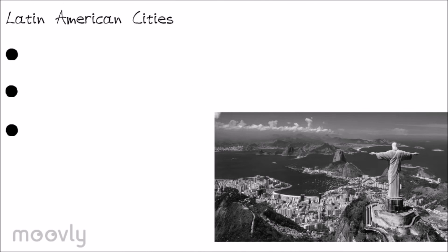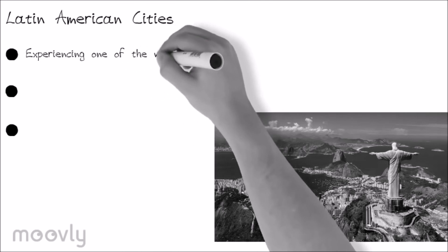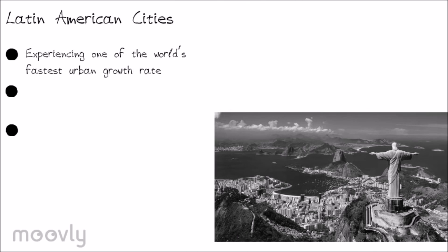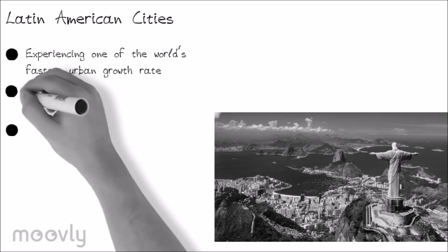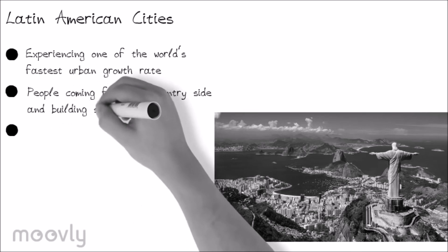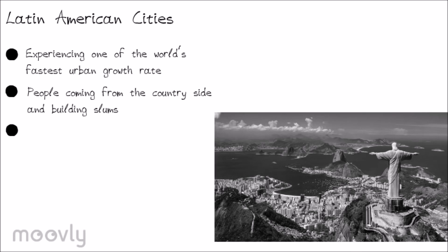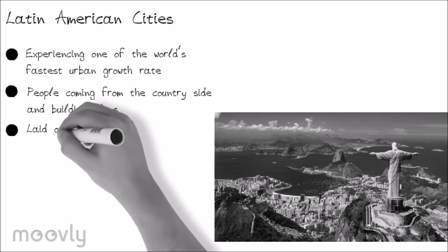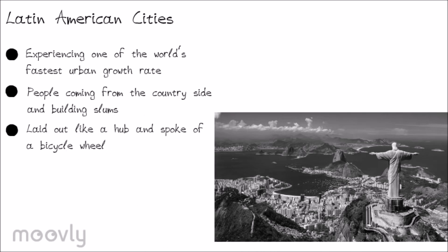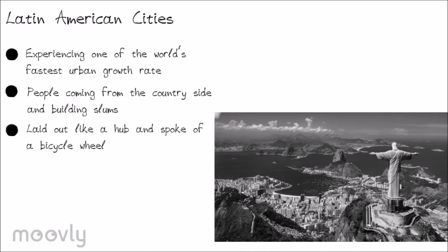Latin American cities are experiencing one of the world's fastest urban growth rates, but still prefer to integrate their native past into their architecture. They are growing so fast because many people are coming in from the countryside and building slums to live in the city. The cities are laid out like a hub and spoke of a bicycle wheel, with the CBD in the center, the high-class residential area extending outwards, the middle-class residential filling a small space, and slums on the edge of the cities.